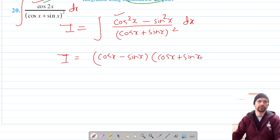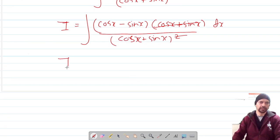This cancels one of these terms, and now we are left with (cosx minus sinx) upon (cosx plus sinx) dx.